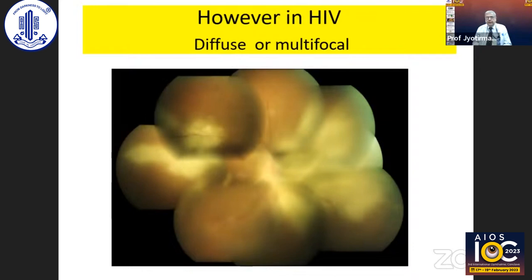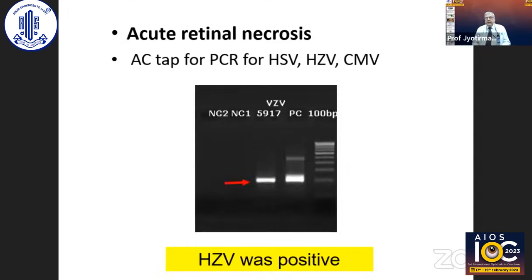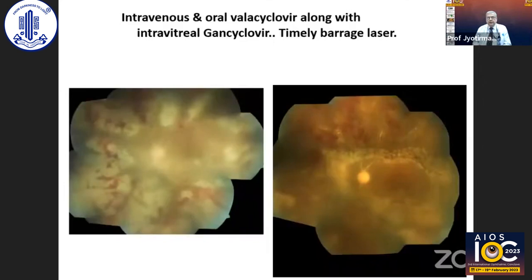This is a case of acute retinal necrosis. You should do viral PCR for HSV, VZV, and CMV. VZV was positive. Based on the investigation, the patient was treated with antiviral treatment — both oral and intravenous acyclovir — and barrier laser was given to salvage the vision.